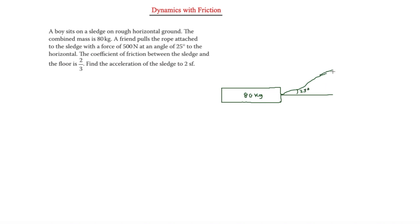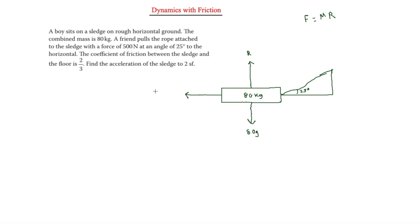We'll have to resolve this in a second. Going downwards we have 80g, and upwards we have R. Looking at friction, from the last video we know friction equals the coefficient of friction times R. So if the coefficient of friction is two-thirds, friction is going to be two-thirds R.